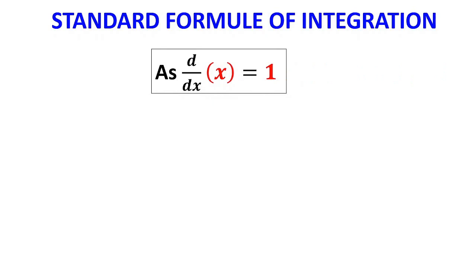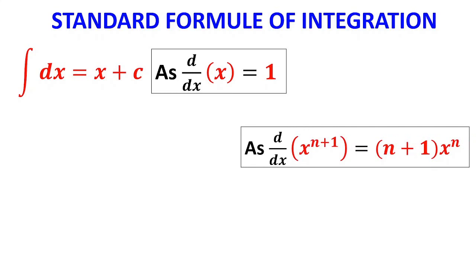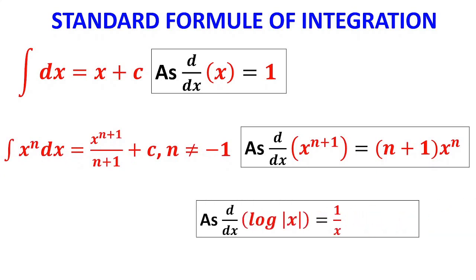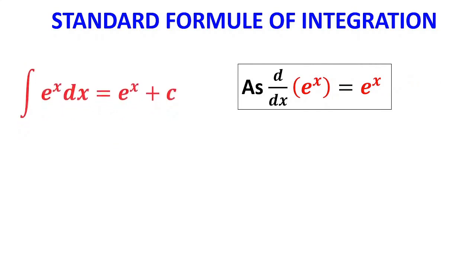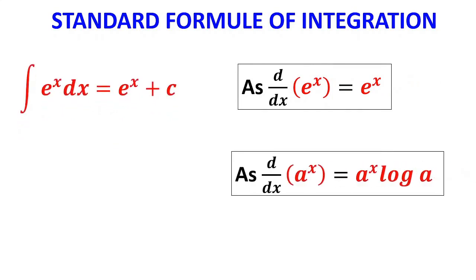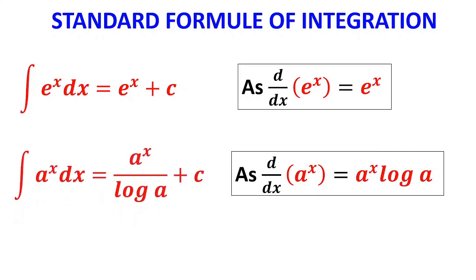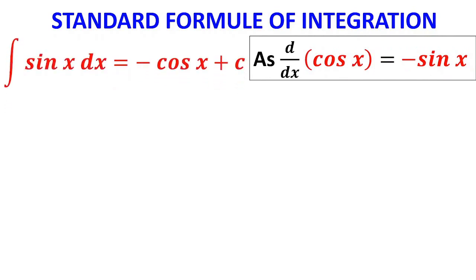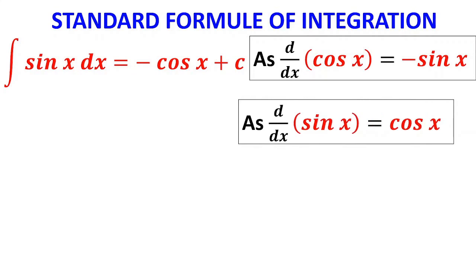Now we go through standard formulas, derived directly from differentiation. Since d/dx of x is 1, ∫dx = x + c. Since d/dx of xⁿ⁺¹ is (n+1)·xⁿ, ∫xⁿ dx = xⁿ⁺¹/(n+1) + c. Differentiation of log x is 1/x, so ∫(1/x)dx = log x + c. Differentiation of eˣ is eˣ, so ∫eˣ dx = eˣ + c. Differentiation of aˣ is aˣ·log a, so ∫aˣ dx = aˣ/log a + c. Since differentiation of cos x is −sin x, ∫sin x dx = −cos x + c; and since differentiation of sin x is cos x, ∫cos x dx = sin x + c.